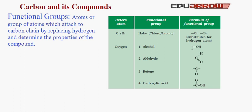Second functional group is Aldehyde. It is represented as -CHO. The formula is represented here. Third is Ketone. It is represented as -CO. The formula is shown there.